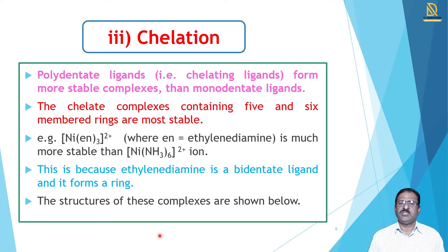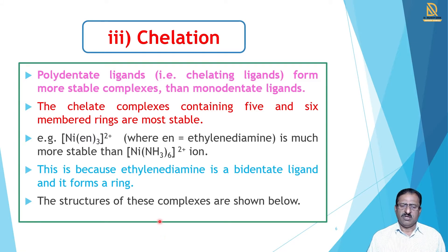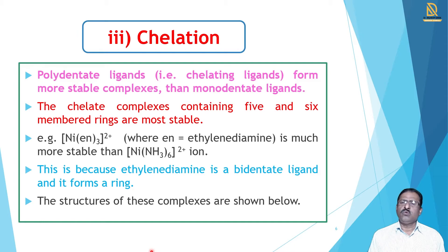The third factor is chelation. Chelation means the formation of chelate complexes. Chelate means crab's claw — when the ligand is polydentate, that polydentate ligand has two or more than two donor atoms. When there are two or more donor atoms, such ligands form more stable complexes than monodentate ligands. Generally, chelate complexes contain bidentate, pentadentate, or hexadentate donor atoms, and depending upon that they are called pentadentate or hexadentate, and these are more stable.